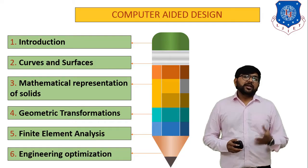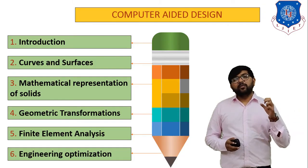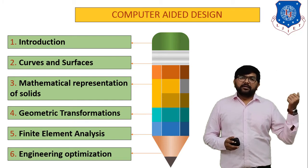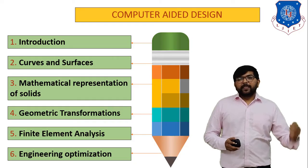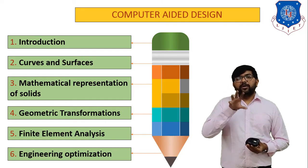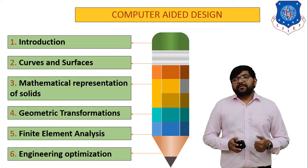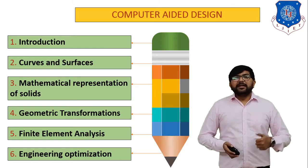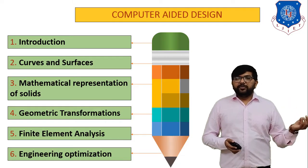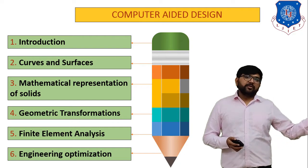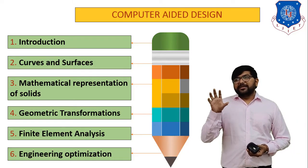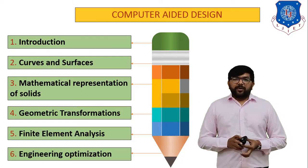In mathematical representation of solids, we have to design objects in 3D using software like SolidWorks, AutoCAD, ProE, and Creo. Geometric transformation means transferring any image from one position to another. In finite element analysis, chapter five, we have to find solutions for different types of problems like cantilever beams and uniform distributed loads, and calculate the deformation of beams.